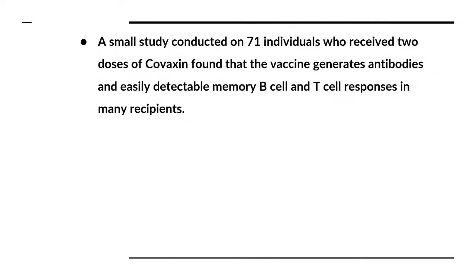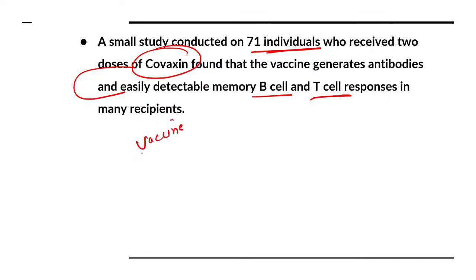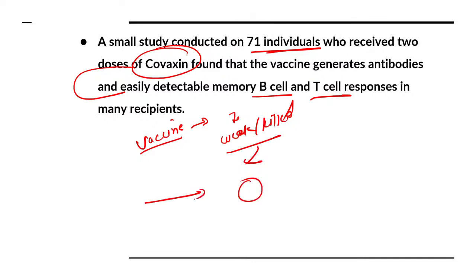This study was conducted on 71 individuals who took the vaccine dose. It was found that memory B and T cells were created, which means that if there is any future infection, you can be protected. The basic mechanism of any vaccine is: the causal organism in a weakened or killed form is introduced into your body, and your immune system produces antibodies against a specific antigen.